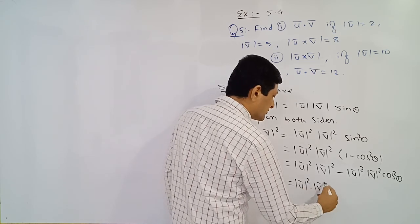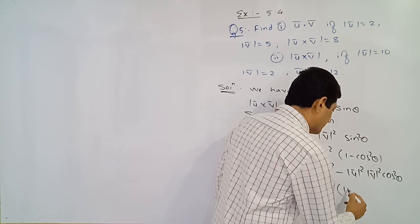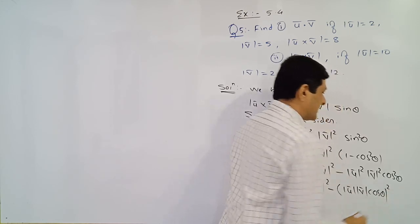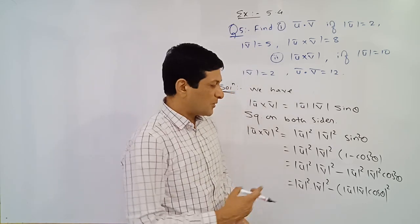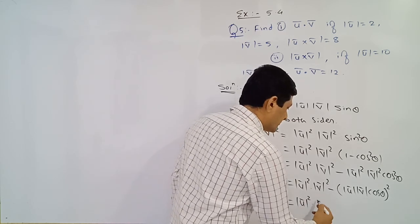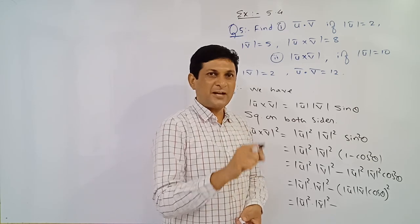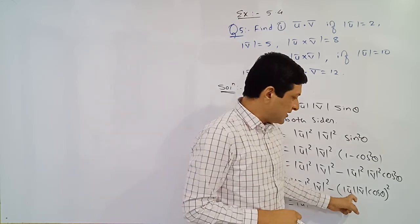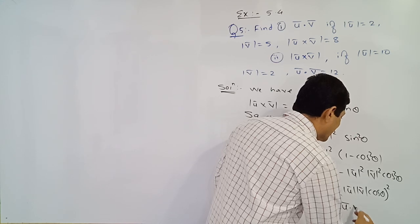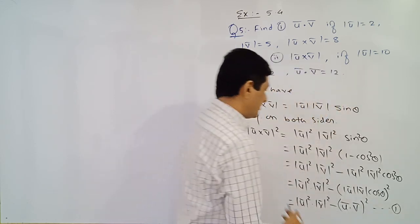Keeping the first term as it is, and taking square common from all terms using laws of indices, the second term becomes: minus the square of the quantity (magnitude of u-bar times magnitude of v-bar times cos theta). We already know that magnitude of a-bar dot v-bar equals magnitude of a-bar times magnitude of v-bar times cos theta. So that term is nothing but u-bar dot v-bar, squared.